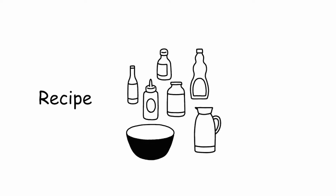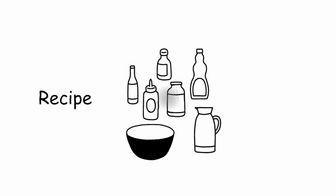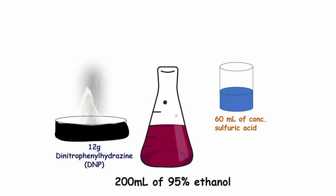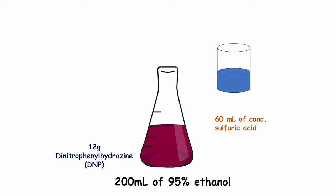Recipe to make DNP stain. Dissolve 12 gram of 2,4-dinitrohydrazine, 60 ml of concentrated sulfuric acid and 80 ml of water in 200 ml of 95% ethanol.